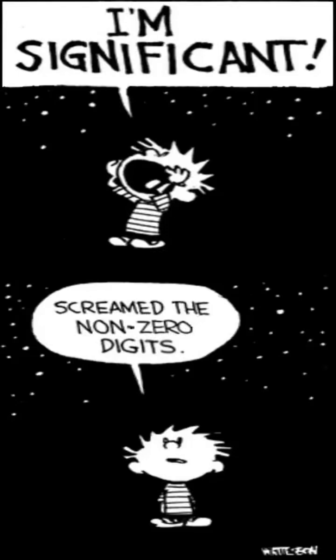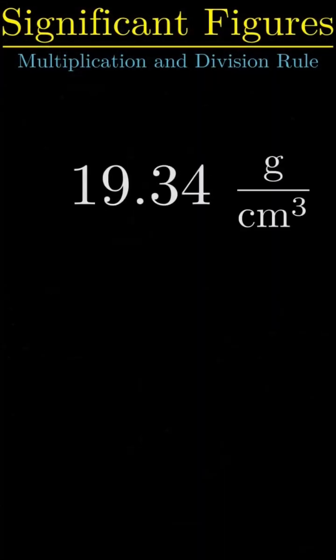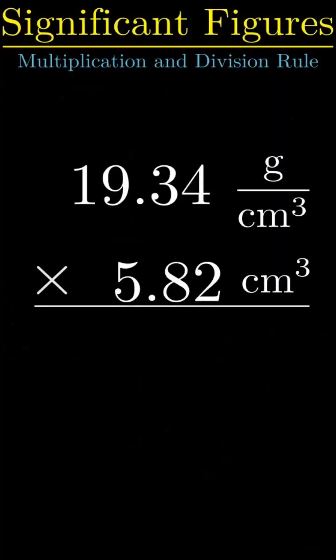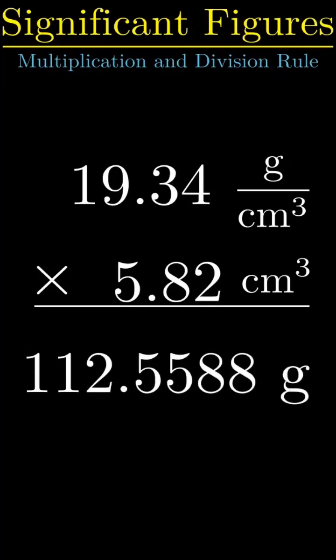Here is a short, practical demonstration of the significant figure rule for multiplication and division. Let's say we have the density and volume of an object and we want to find the mass. Multiply the values together and we get 112.5588 grams.